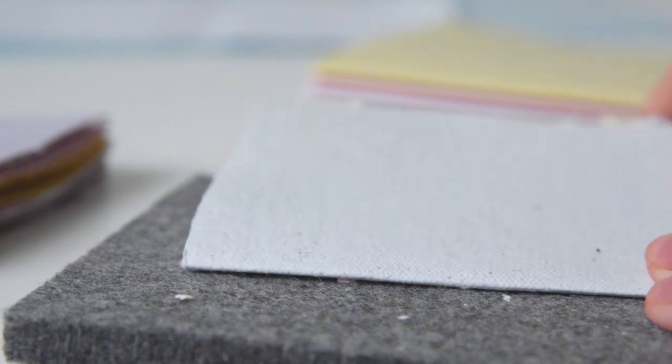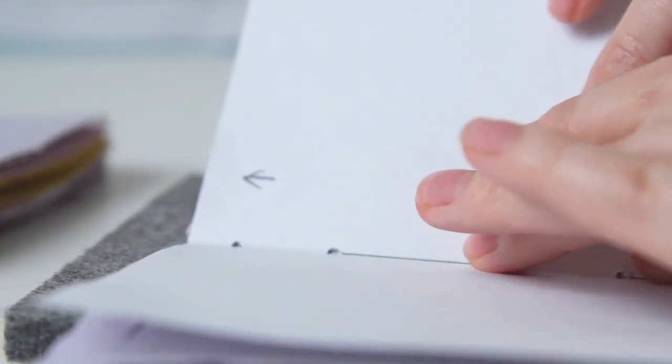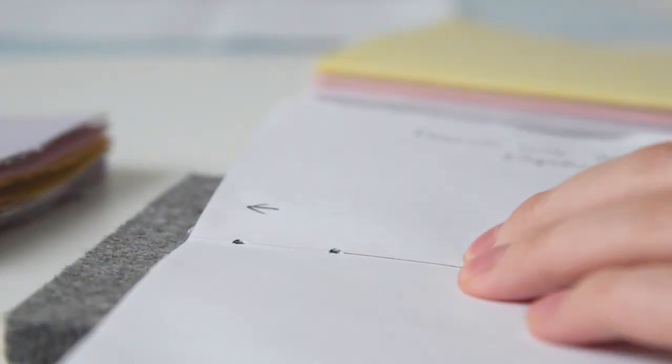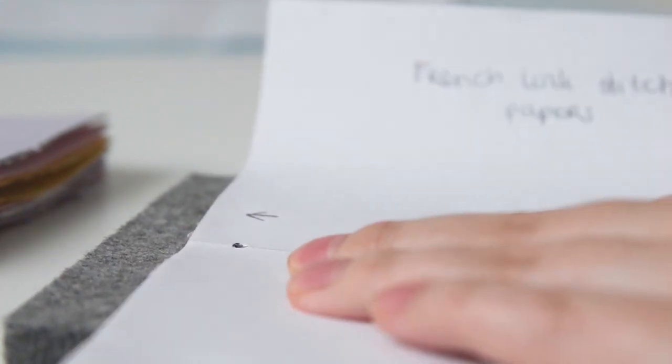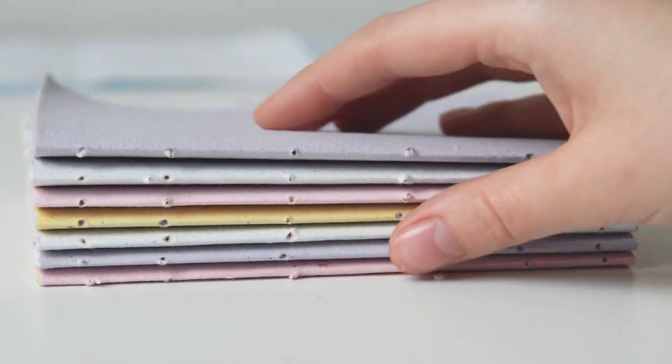Remove the template and repeat with your other signatures. Then your text block should look something like this.